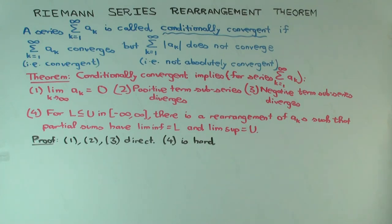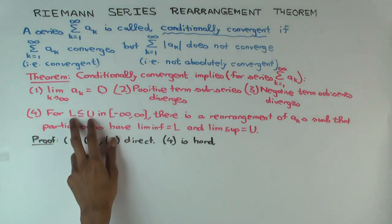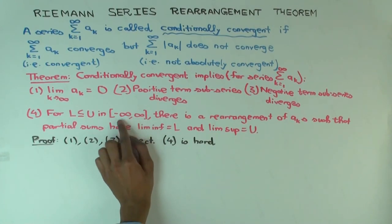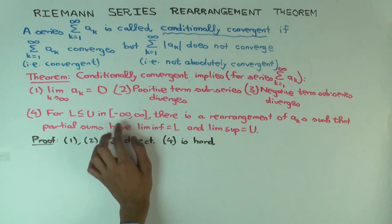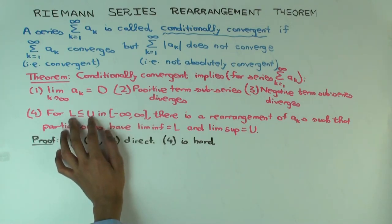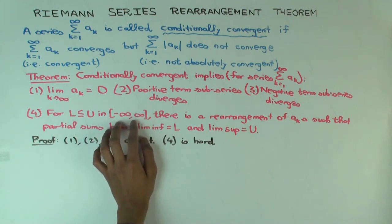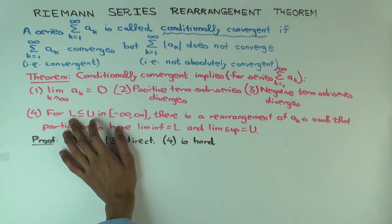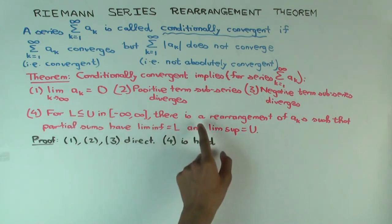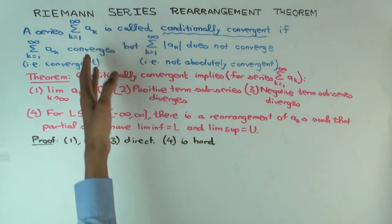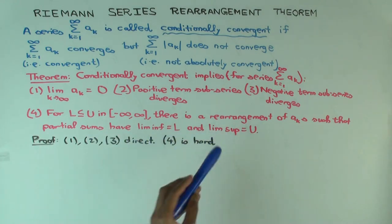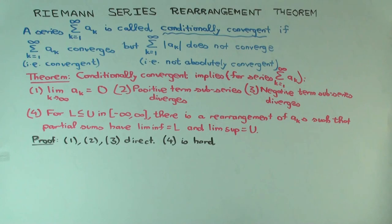Now we come to the really remarkable fact — Part 4. Suppose I pick two numbers L and U in the extended reals (including minus infinity and infinity) with L less than or equal to U. Then there is a rearrangement of the a_k's such that the partial sums of the rearranged series have lim inf equal to L and lim sup equal to U.